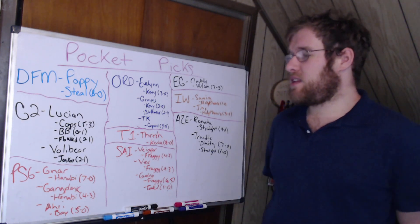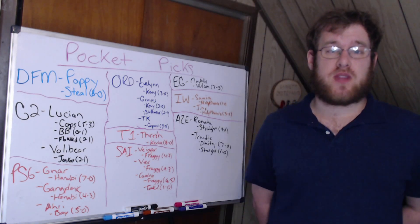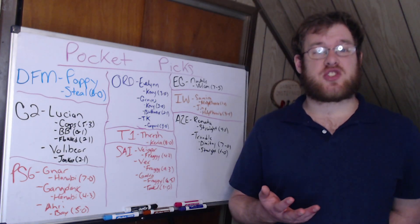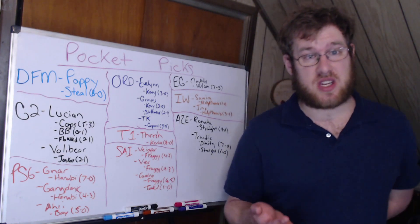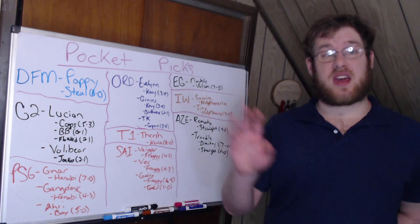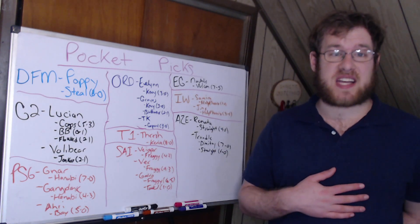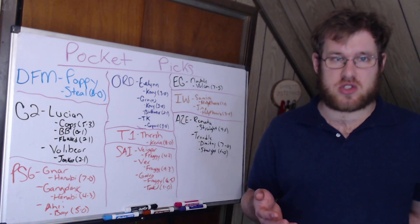I might be missing something, but I couldn't find it. Caps was 5-3 on Lucian last year, Broken Blade was 1-1, Flakked was 2-1. So Lucian was getting banned against G2 despite them not picking it all spring. That's very interesting because no one even was like, hey, let's just see how they fare with Lucian. No, we're not going to give them the opportunity to flex that pick.